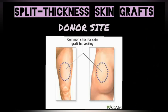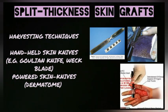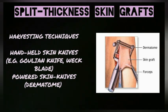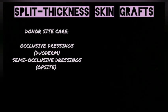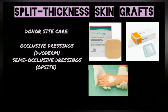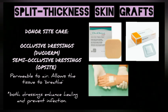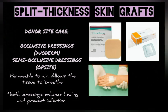The preferred donor site is the inner thigh and buttocks area to avoid cosmetic objection. For harvesting, hand-held knives such as the Goulian knife and back plate can be used, as well as a powered skin knife — an electrical device known as a dermatome — which cuts thin slices of skin. After harvesting, a dressing is applied to the donor site, either an occlusive dressing like Duoderm or a semi-occlusive dressing like Opsite. Both provide moisture to enhance healing and prevent infection; the semi-occlusive type also allows air permeability.